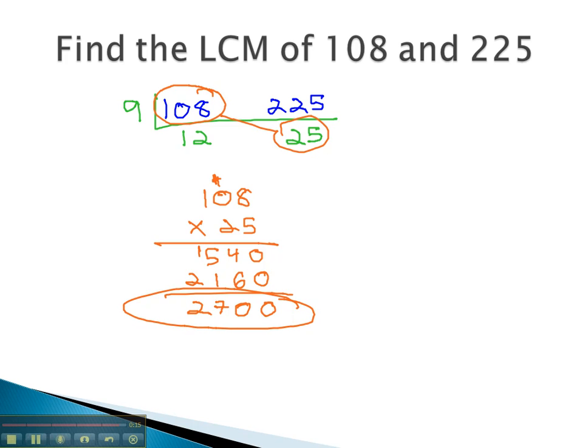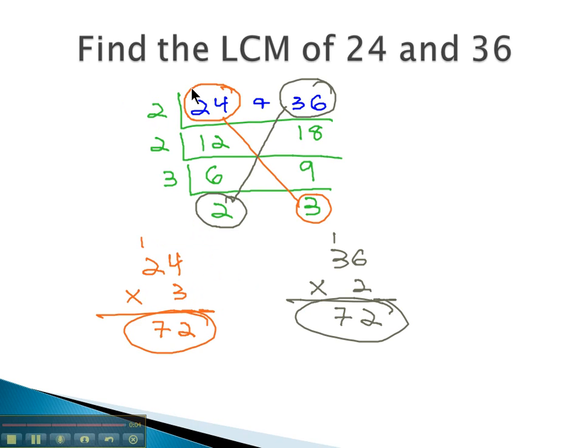So we can find the least common multiple of two numbers by dividing out what we can out of both numbers. And once we've divided out what we can out of both numbers, we find our solution by simply multiplying the product diagonally.